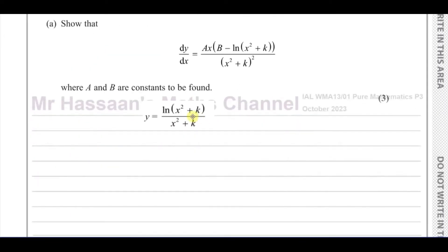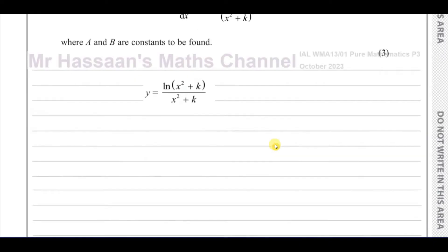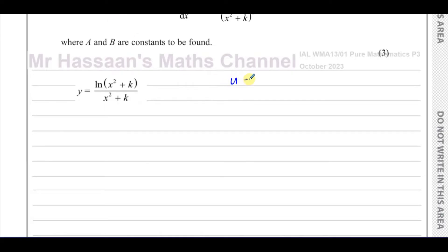When we differentiate something like this, we have a quotient of two separate functions, so we have to use the quotient rule. The numerator we call u, so u is ln(x² + k). We don't need a modulus sign here because k is positive and x² is always ≥ 0, so the argument is always positive. And v is equal to x² + k.